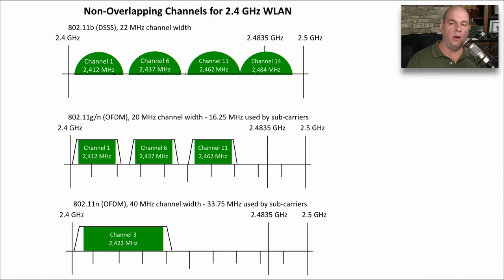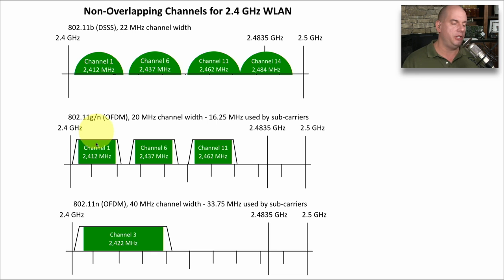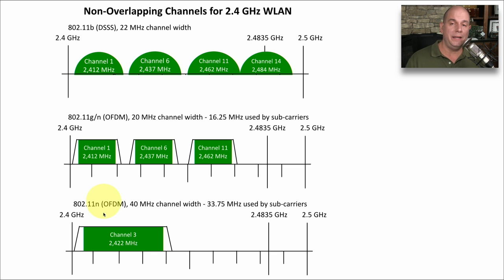Here's a better view of all these non-overlapping channels. You can see that for 802.11b we have channel 1, channel 6, channel 11, and channel 14 at the very top — these channels are 22 MHz wide. For 802.11g and n, the channels are 20 MHz wide, but we still have those non-overlapping channels 1, 6, and 11. And as mentioned, 802.11n has twice the channel width at 40 MHz, which allows for higher speeds on those 802.11n networks.